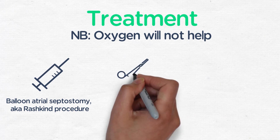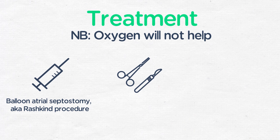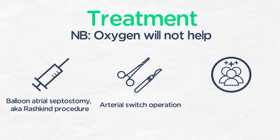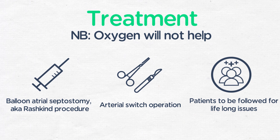The long-term management of this lesion includes surgical repair. In the modern era, starting since the late 1980s to early 1990s, this has been an arterial switch operation, usually done in the first week of life. These patients need to be followed lifelong for issues including coronary artery stenosis related to the switch and manipulation of the coronaries, neo-aortic valve disease, pulmonary stenosis, and other long-term issues.